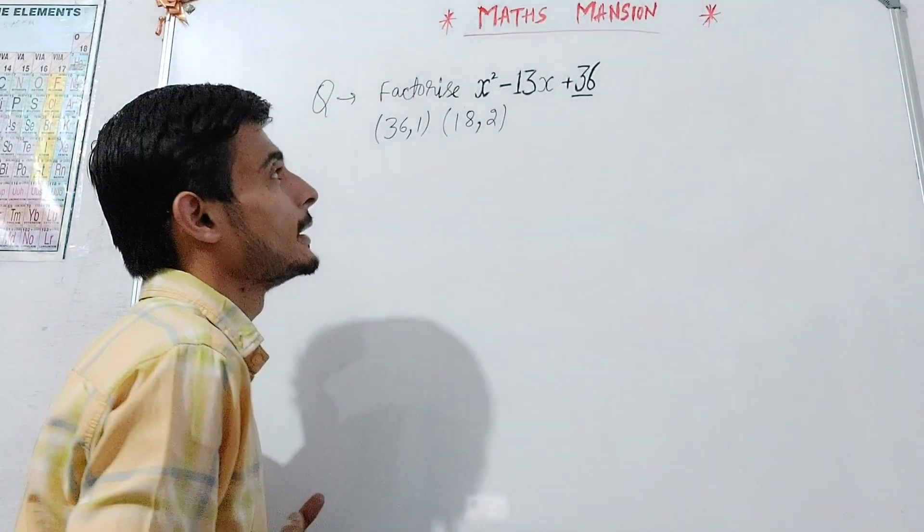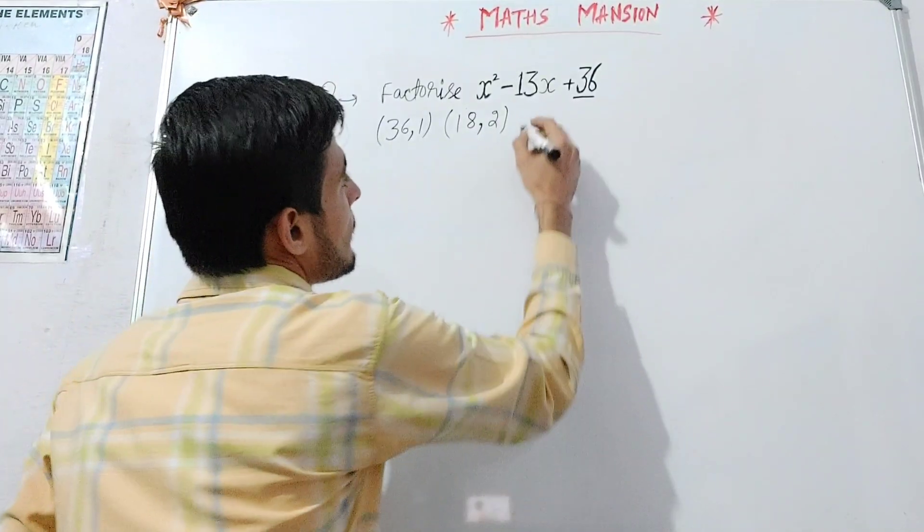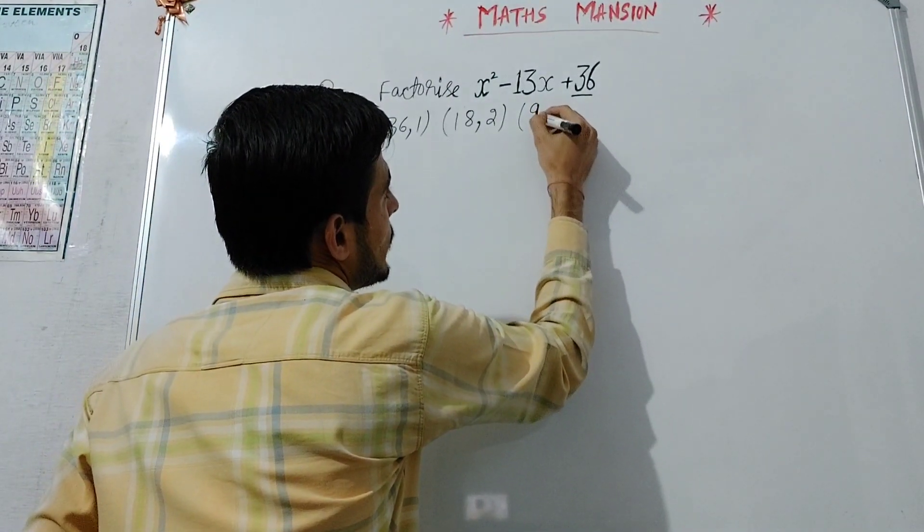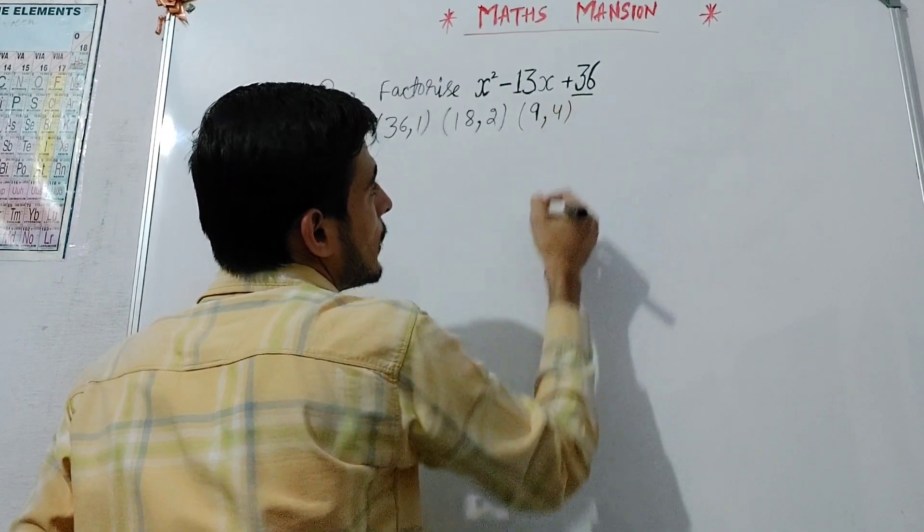Again, dividing 18 by 2, we get 9. And multiplying 2 with 2, we get 4.